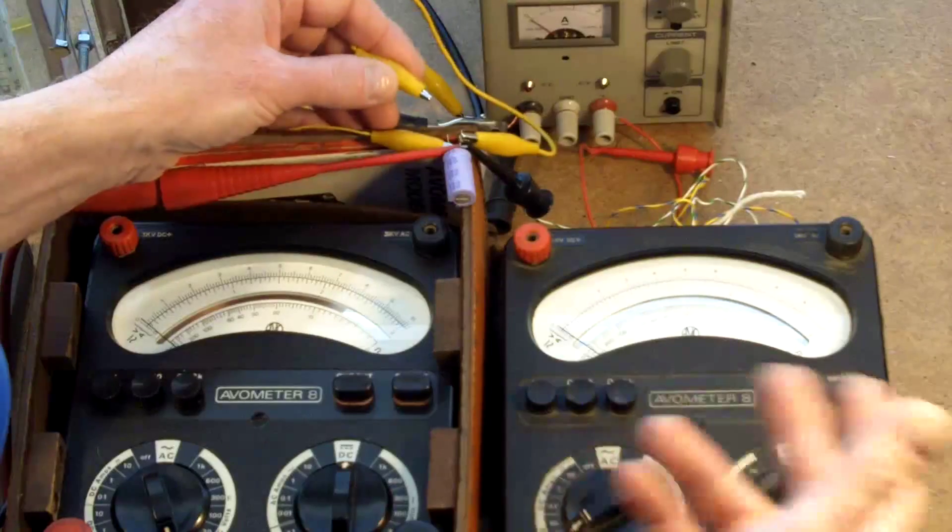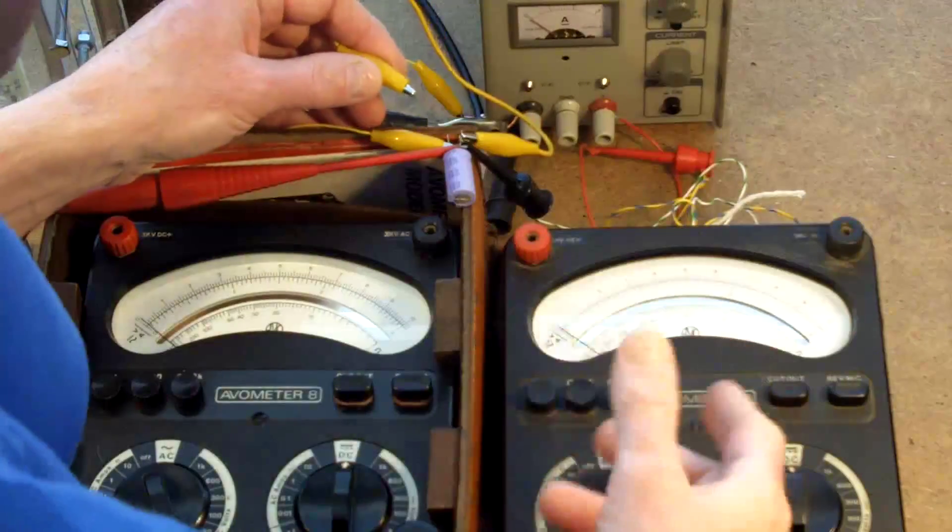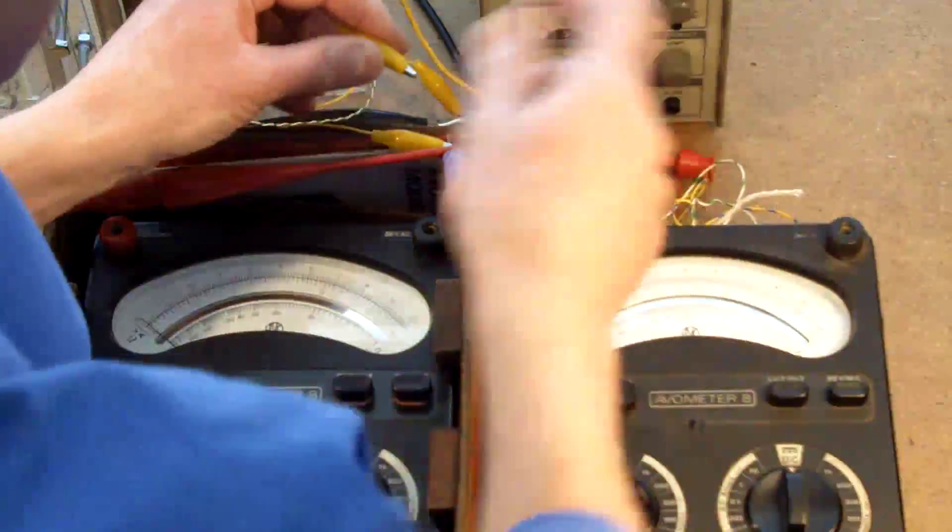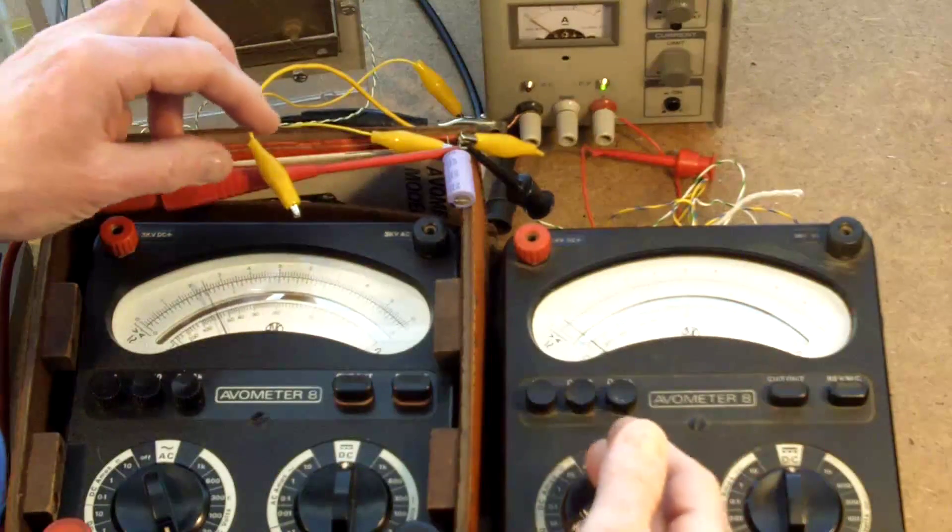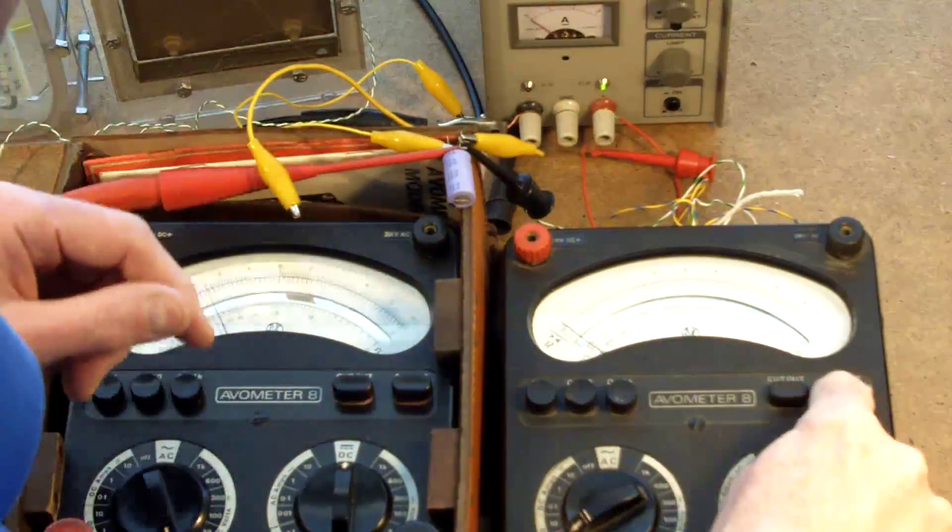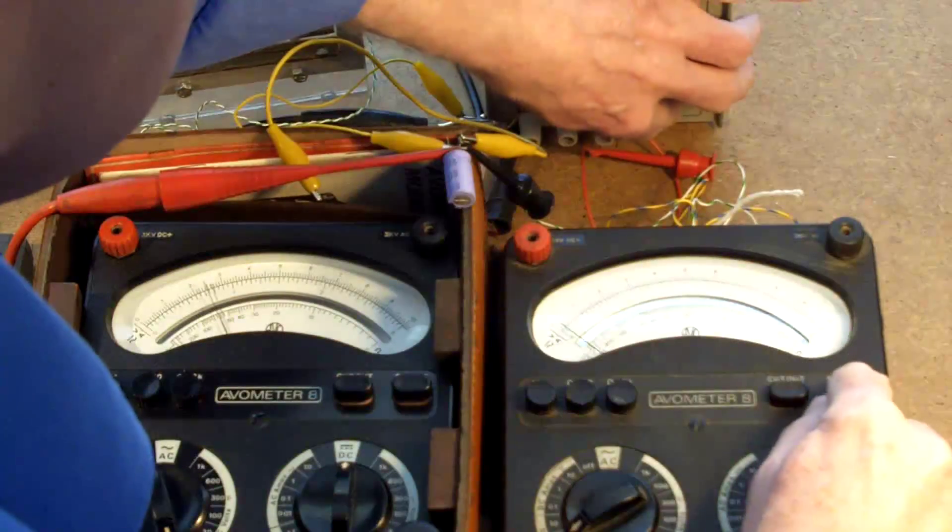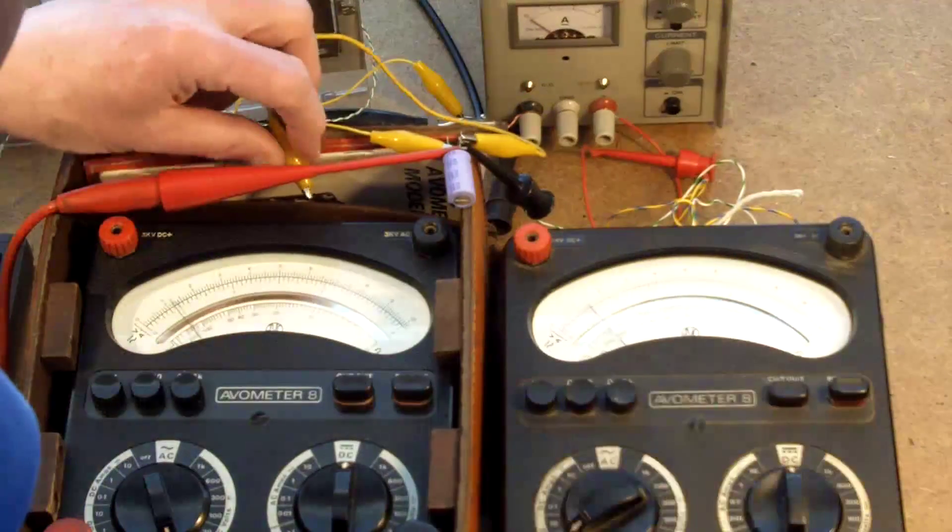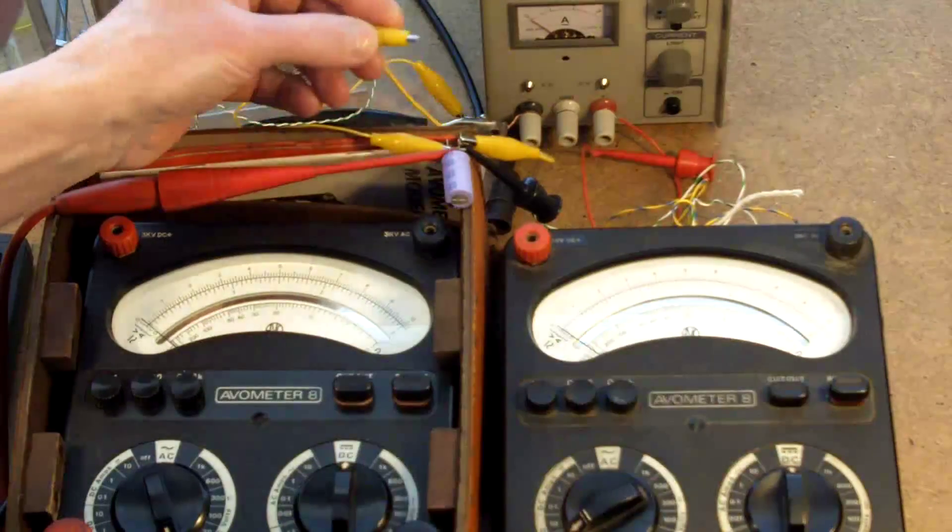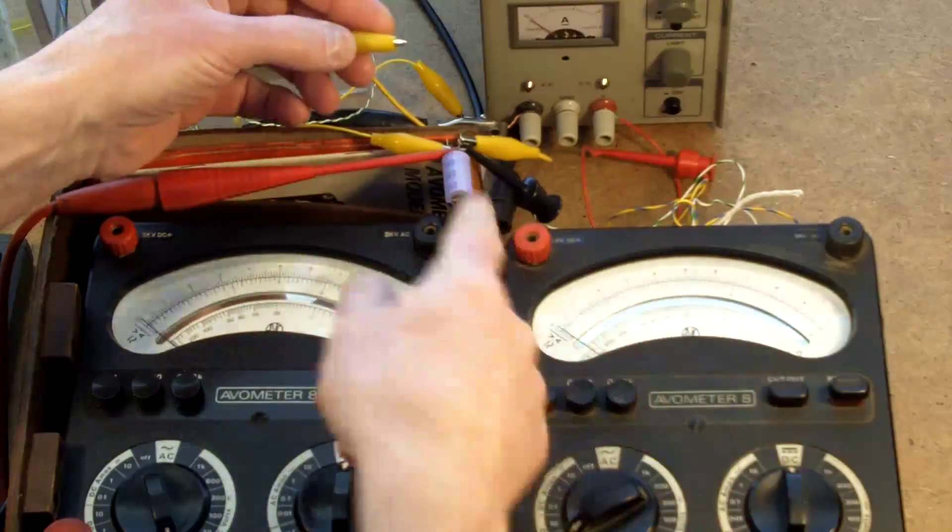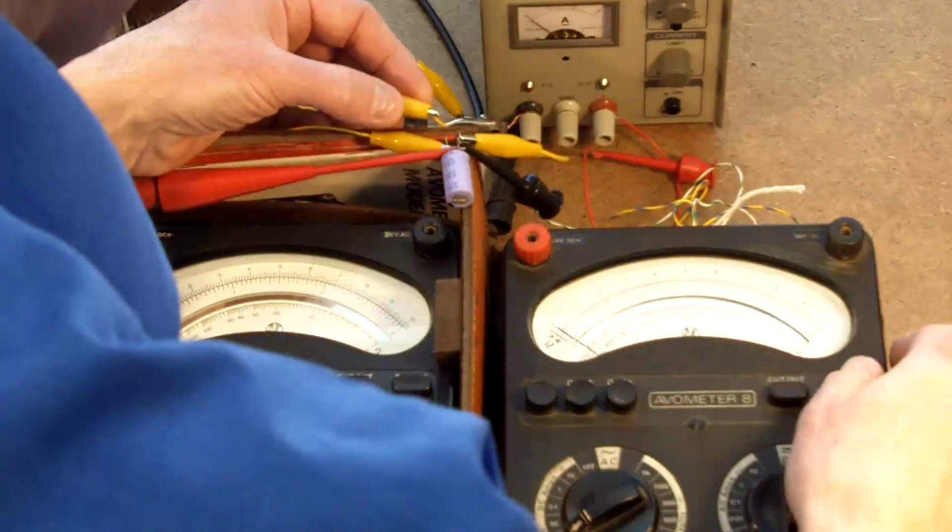But a capacitor, when you short it out, it stays shorted out. Always dangerous doing this, shorting this out with a meter on. So I'll switch the power on. We get the kick. I'll switch off. Reverse the meter. Short it out. And it stays shorted. Once the current is discharged from the capacitor, it's gone and stays gone. I'll do that again.